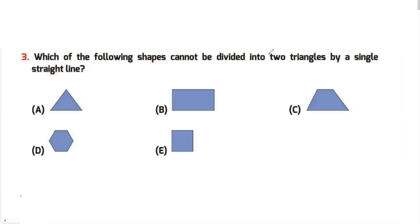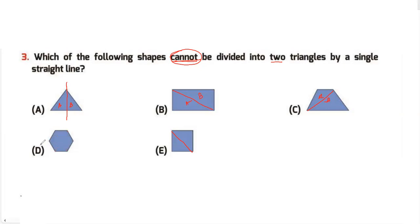Question 3: Which of the following shapes cannot be divided into two triangles by a single straight line? Please focus on whether the question says 'can' or 'cannot' — here it says 'cannot.' For option A you can draw one line and get two triangles. Similarly for C, D, and E, a single straight line produces two triangles. For option B, you would need more than one line to get two triangles. So my answer is option B.